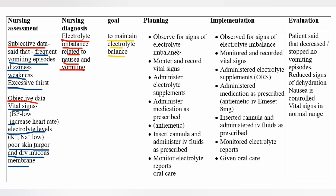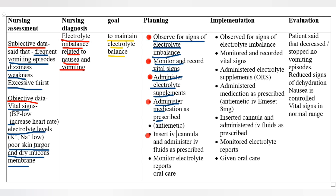Planning: observe for signs of electrolyte imbalance, monitor and record vital signs, administer electrolyte supplements as prescribed, administer antiemetic medication as prescribed, insert IV cannula and administer IV fluids as prescribed, monitor electrolyte reports, and give oral care.